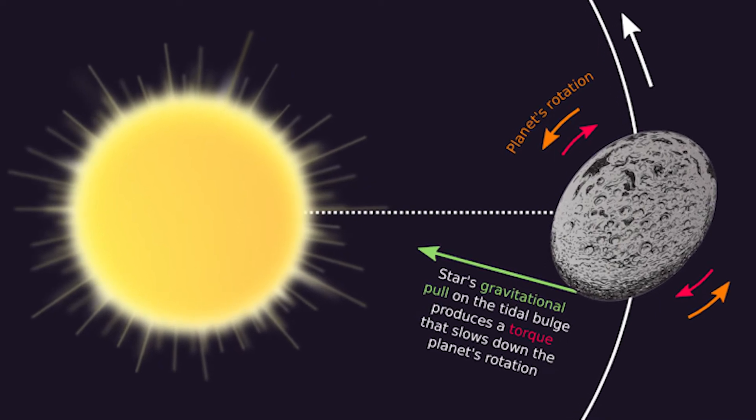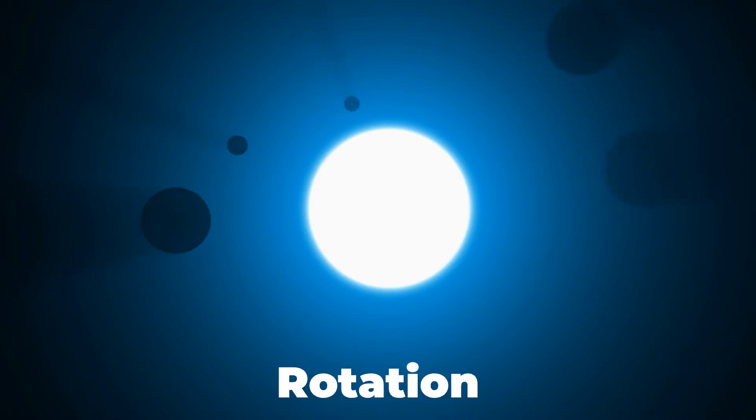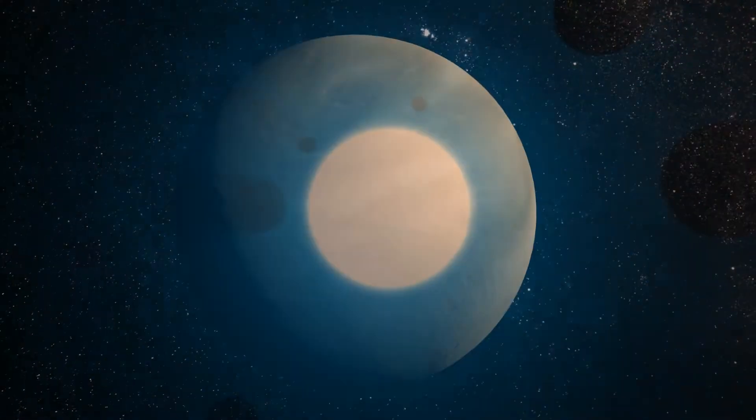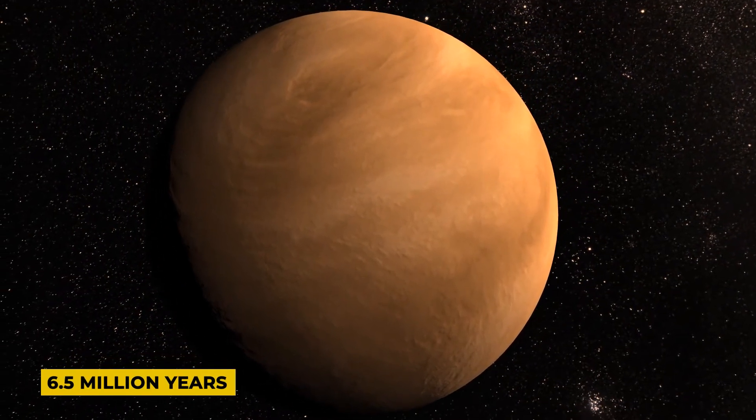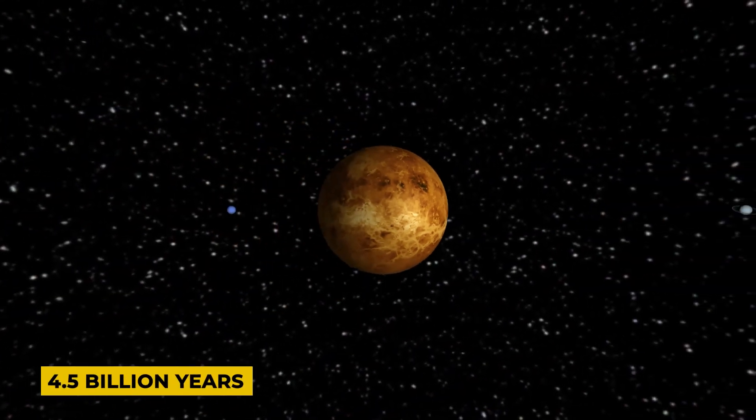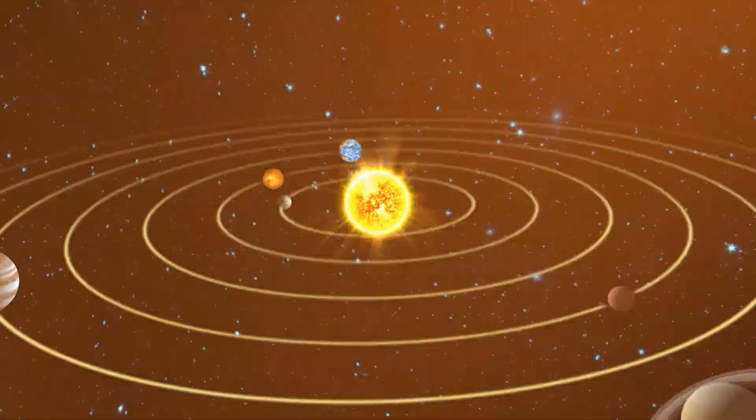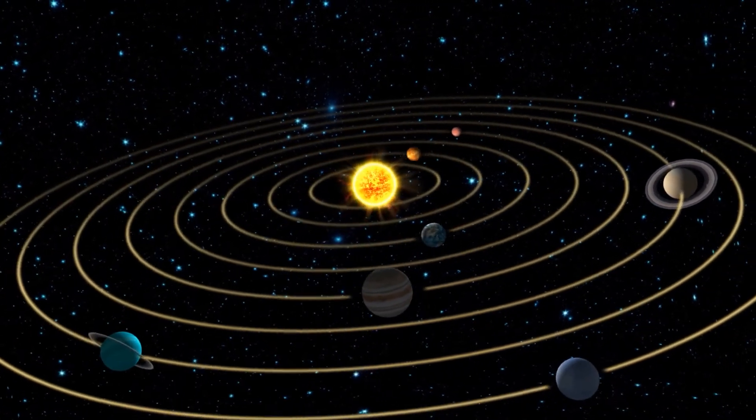The size of the two bodies, their mass, gravity, and rotation rates were all taken into account in the computation. He discovered that it should have only taken Venus six and a half million years to become tidally locked. That is merely a minor portion of the solar system's four and a half billion years of existence. As a result, there must be a reason why Venus's rotation hasn't yet matched its orbit.